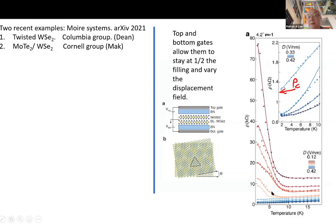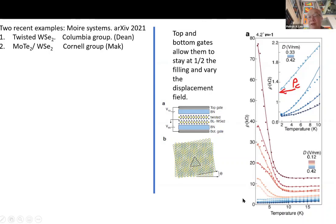As the displacement field is varied at half-filling, the system goes from metal to what looks like an insulator with saturating resistivity — a clearly continuous metal-insulator transition. In the metallic phase resistivity is quadratic (T²), while right at the apparent critical point it becomes linear in T. The linear resistivity at criticality may correspond to the universal jump predicted by Senthil.